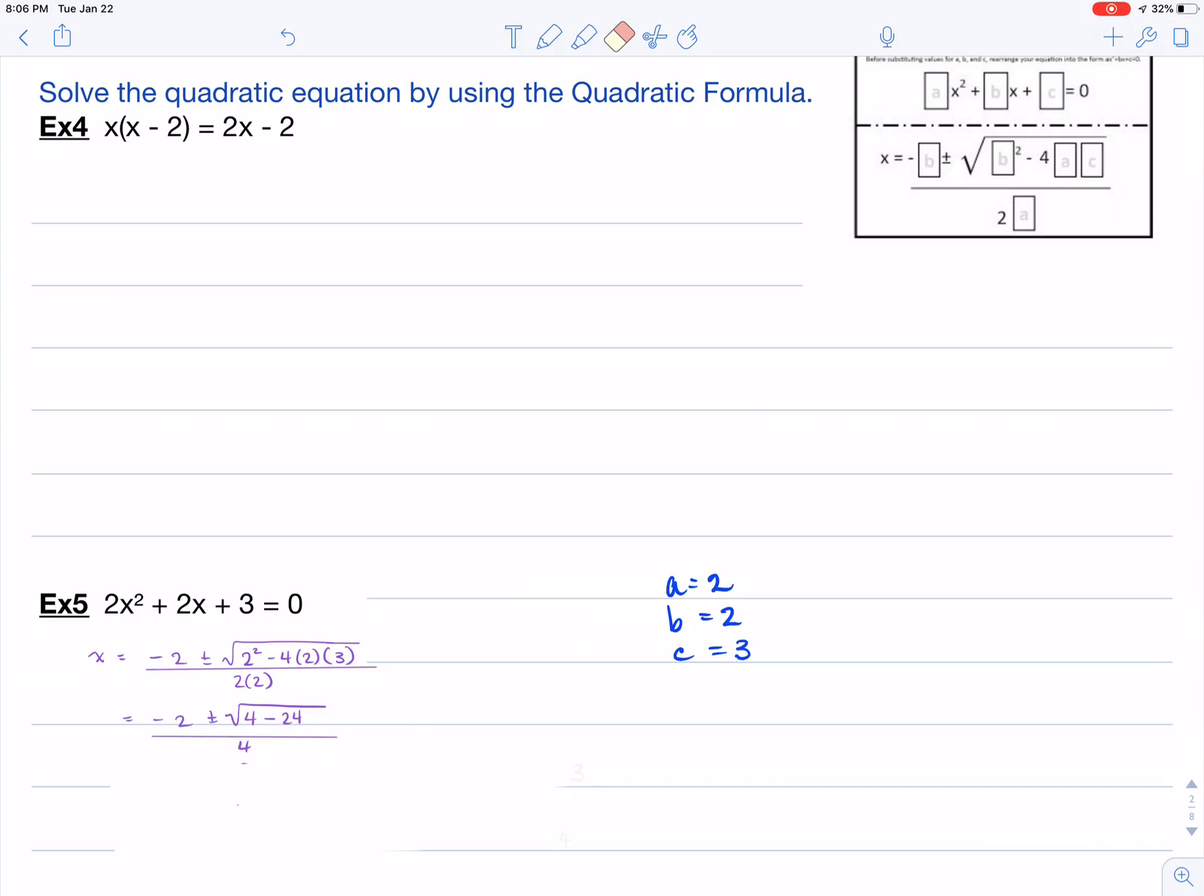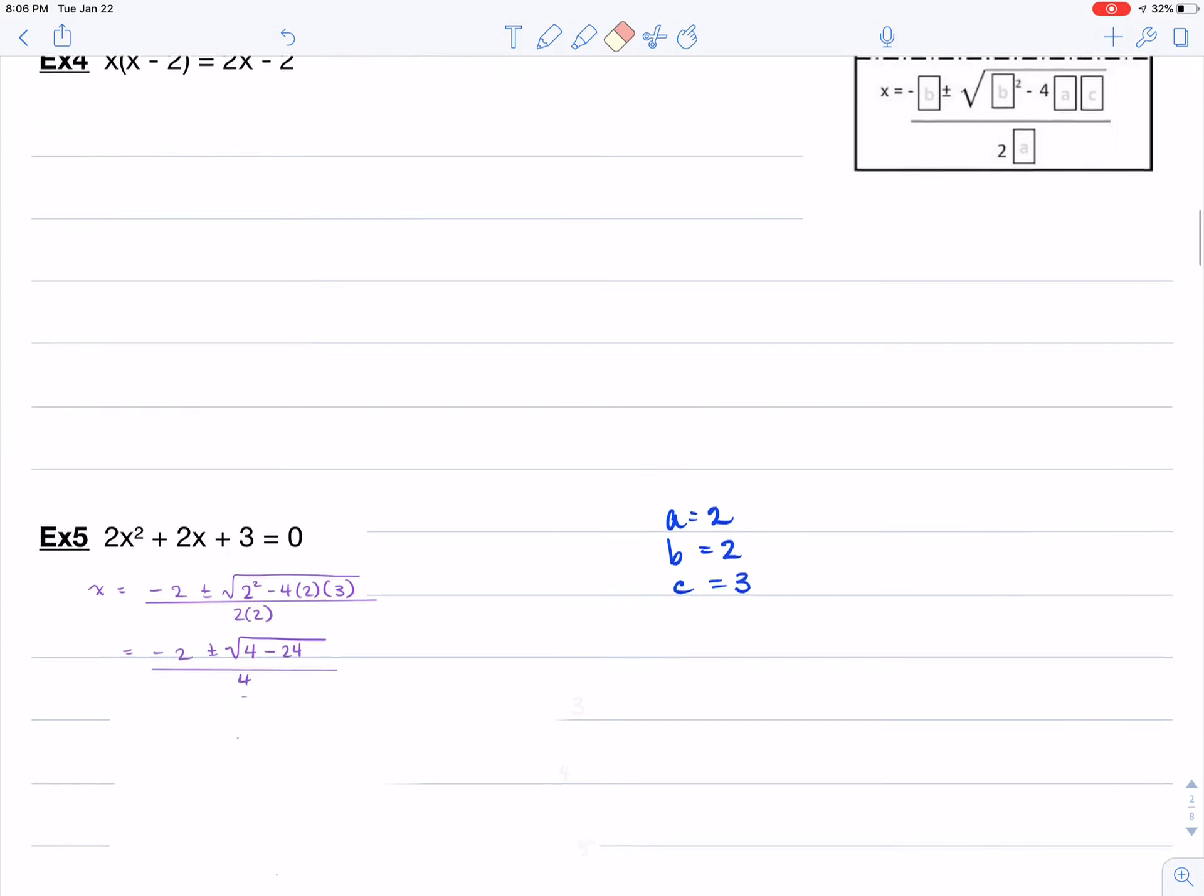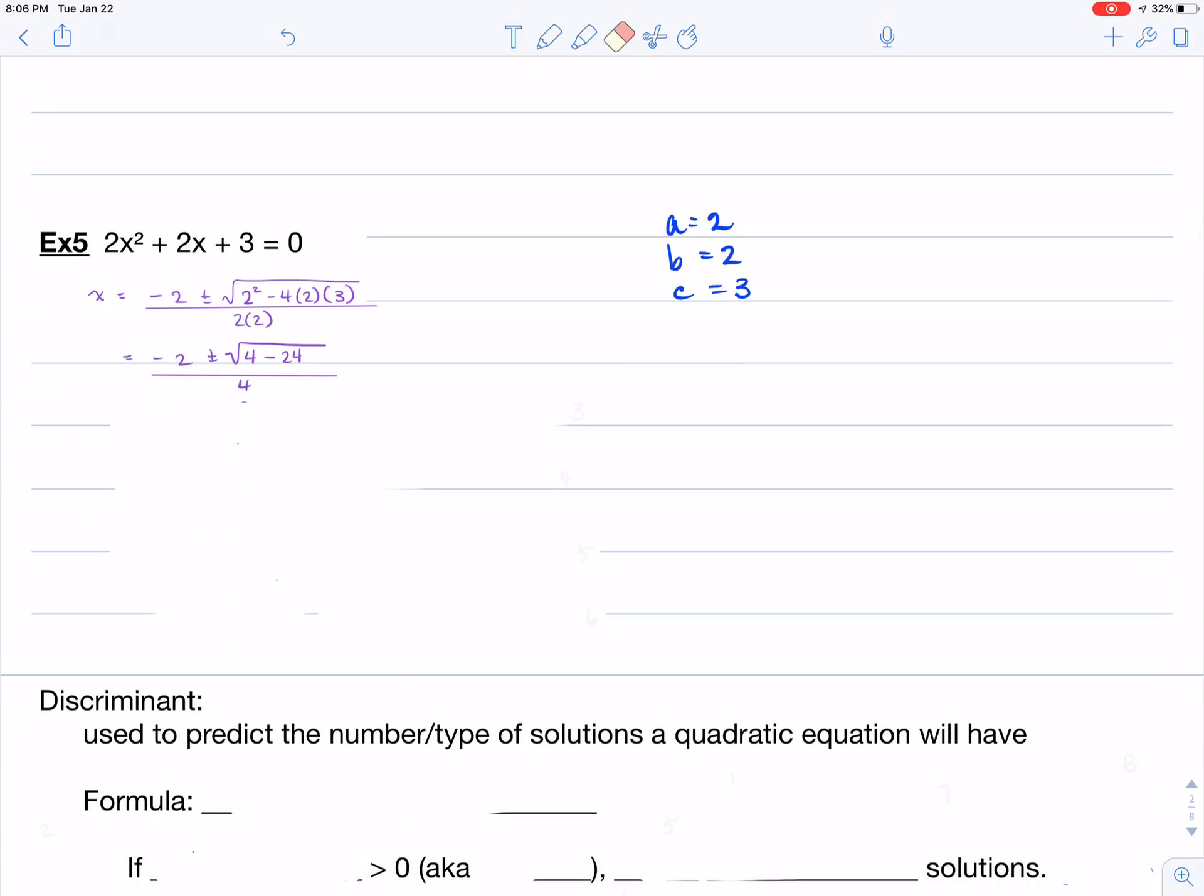So when I start the cleanup then, the inside of the square root is going to become 4 minus 24, which is negative 20.